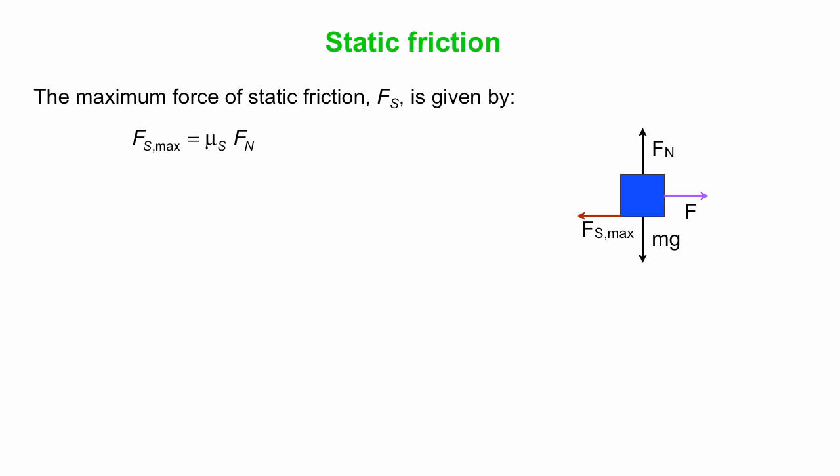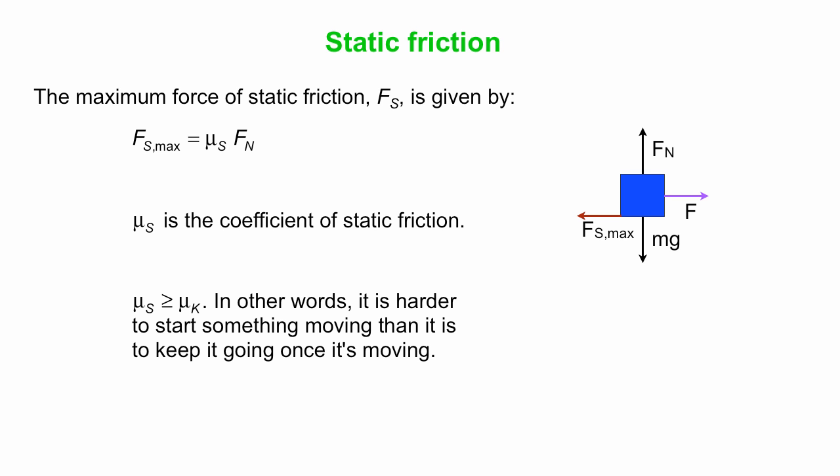The maximum possible force of static friction is given by a similar equation to the kinetic friction equation. This is FS max equals mu S times FN. Mu S here is the coefficient of static friction. Mu S in general is bigger than the kinetic coefficient of friction. In other words, you've probably all experienced this: it's harder to start something moving than it is to keep it going once it is moving. That's consistent with mu S being larger than mu K.